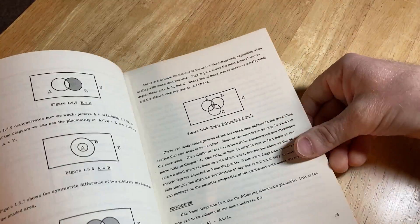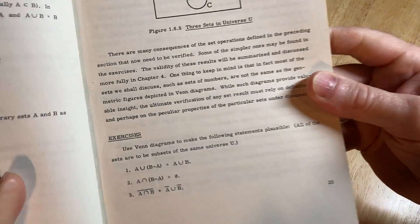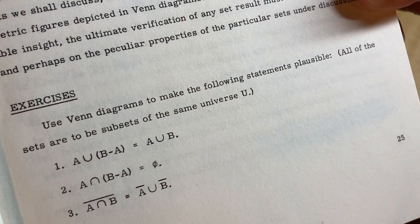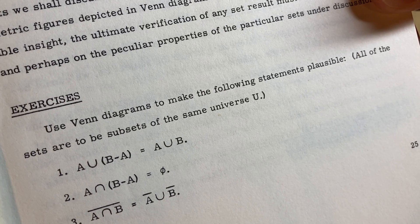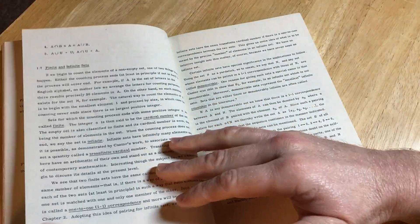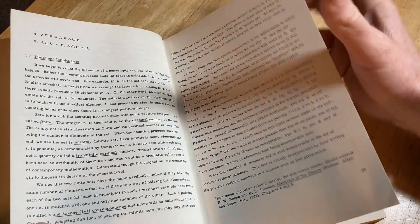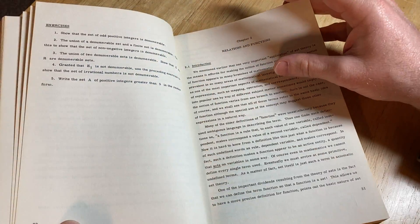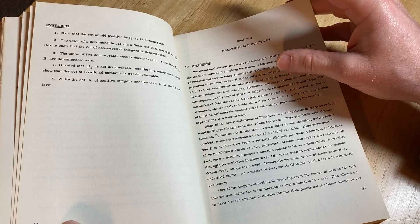Let's look at some of the actual mathematics in here, so here's some basic problems. Use Venn Diagrams to make the following statements plausible, okay. So the font is kind of funny, it's kind of like a weird font. The fact that it has answers is pretty good.